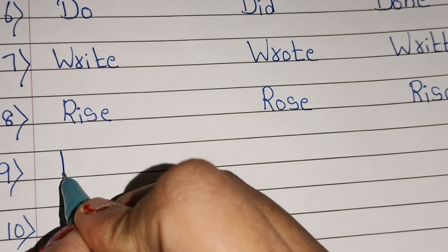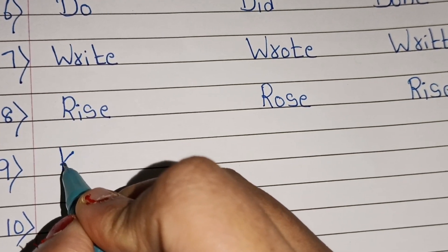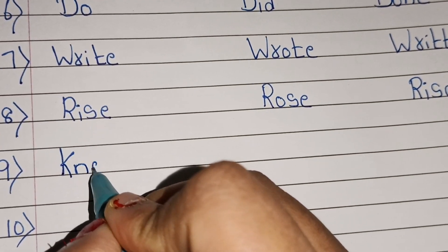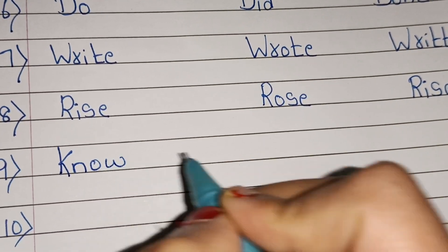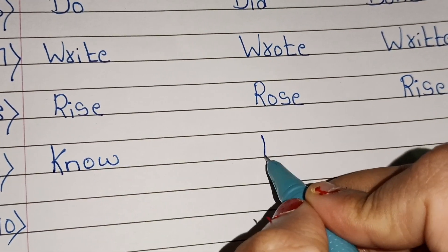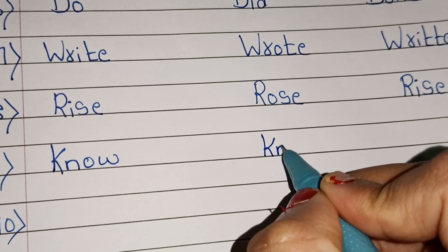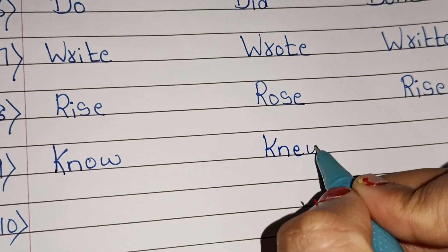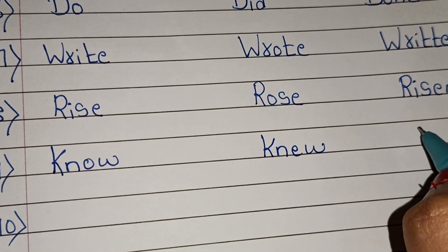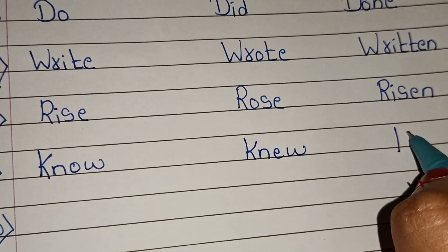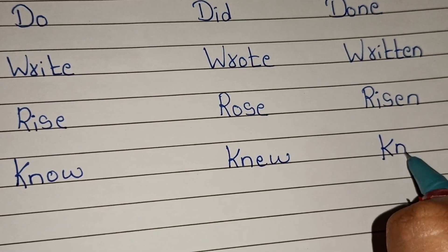Ninth: know — verb 1; knew — verb 2; known — verb 3. Note: the 'k' is silent.